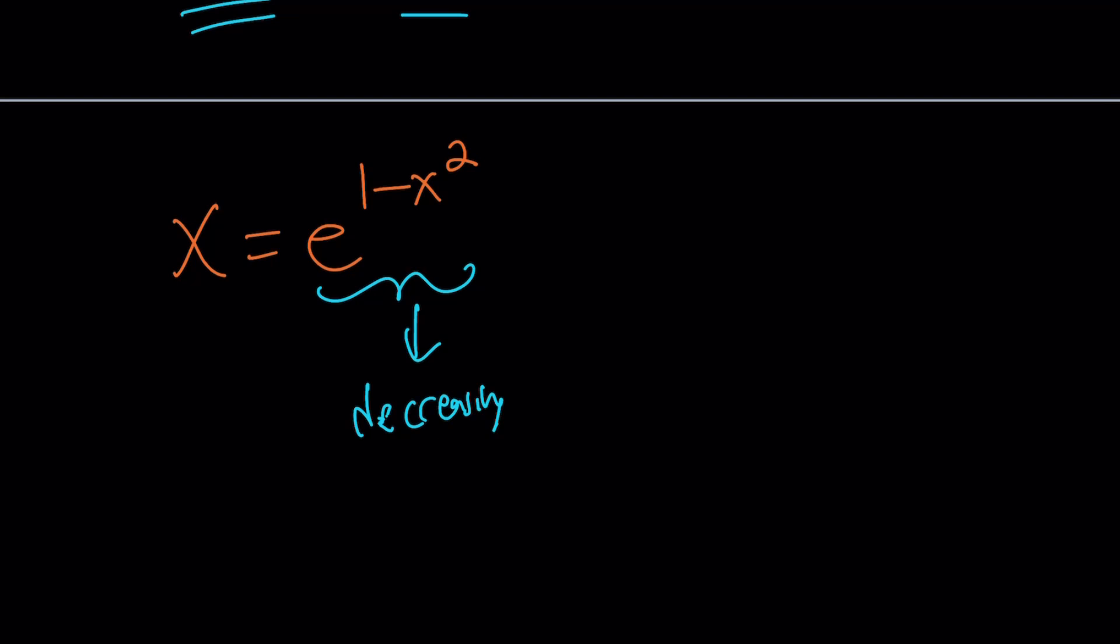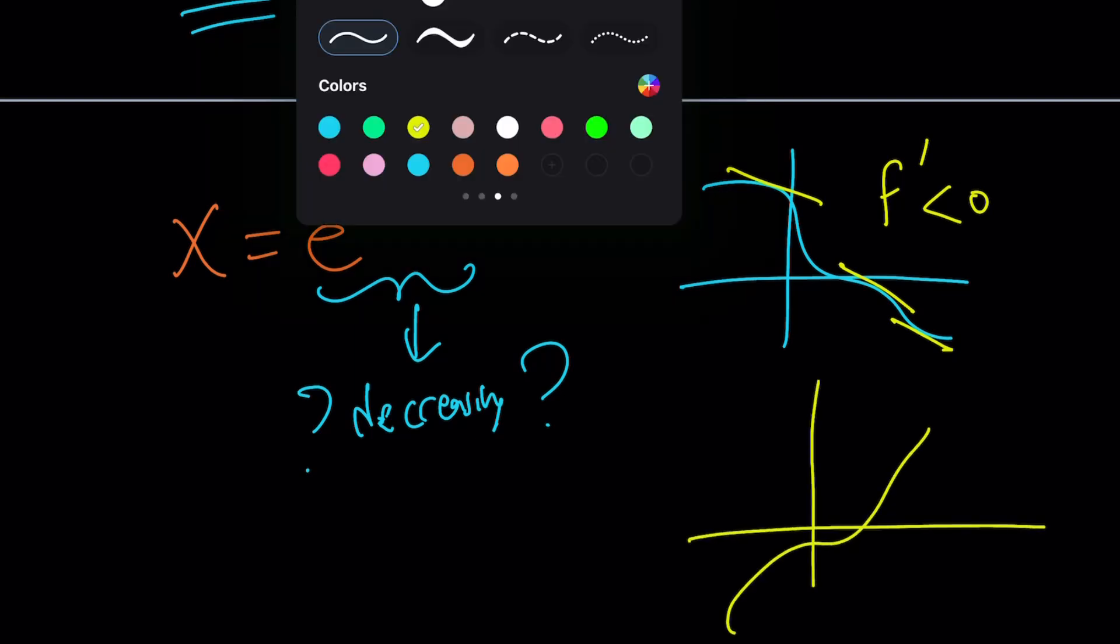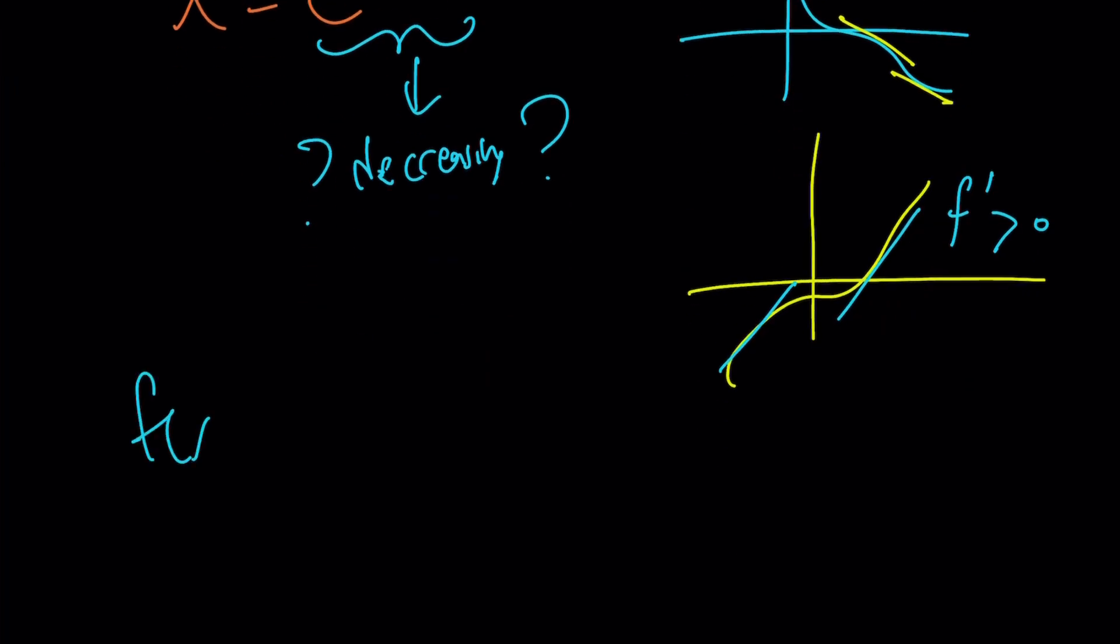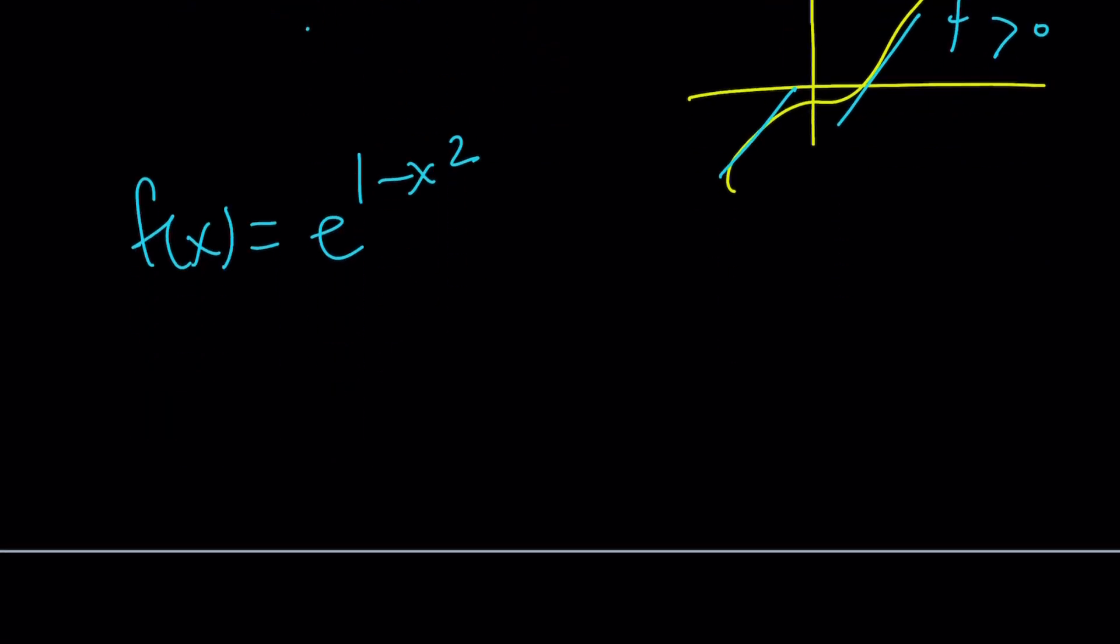In order to understand if a function is decreasing or increasing on a certain interval, use the first derivative. If a function is decreasing then the tangent lines are going to have negative slopes which means the first derivative is going to be negative. If a function is increasing then the first derivative is going to be positive. Let's take a look at f(x) = e^(1-x²) and differentiate it.